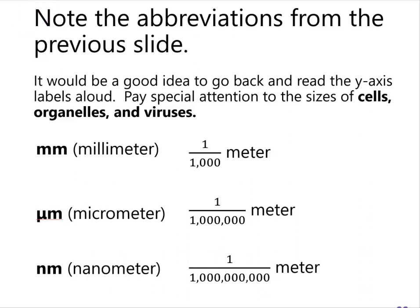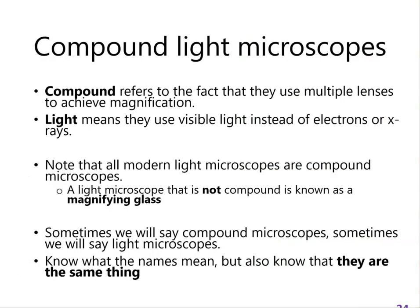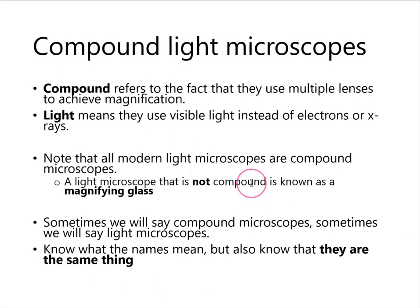For now we want to look at the microscopes that let us see these tiny little things. The first one is the one we use in the lab: compound light microscopes. That means they have multiple lenses — two lenses: an objective lens and an ocular lens. The objective lens sticks down and gets close to the slide, and the ocular lens is what we look through. Both of those magnify the image to different degrees. A non-compound microscope would be a single lens — that'd be a magnifying glass. This is what we'll use in lab.